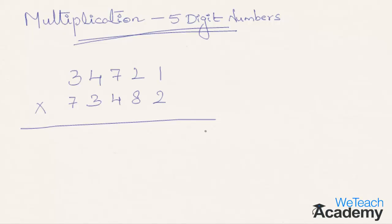Step one: units digit with units digit — 2 into 1 gives 2. Step two: 2 into 2 is 4, plus 8 into 1 is 8; 8 plus 4 is 12. Write 2 in the final answer and carry 1. Step three: 7 into 2 is 14, plus 4 into 1 is 4; 14 plus 4 is 18, plus 2 into 8 is 16; 18 plus 16 is 34, plus 1 carried forward gives 35. Write 5, carry 3.